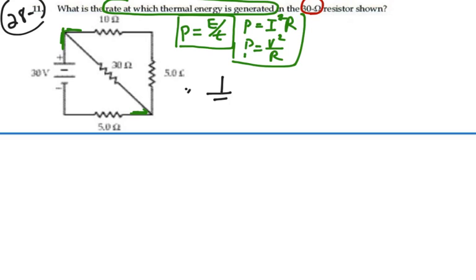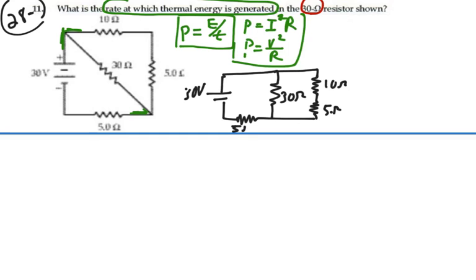We have a 30 volt battery over here, and then we have a 30 ohm resistor in the middle, and then two resistors on the end, which is 10 and 5 ohms. And then we have a 5 ohm resistor over here. And you should verify for yourself that this is indeed the same circuit.